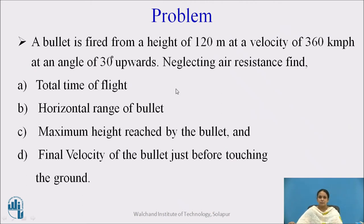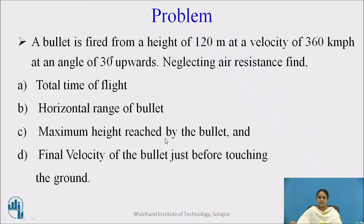Now we will see the problem — how to calculate the time of flight, range, and maximum height. In this problem, a bullet is fired from a height of 120 meters at a velocity of 360 kilometers per hour at an angle of 30 degrees upward, meaning it is an inclined projection thrown upward with an inclination of 30 degrees. Neglecting air resistance, find the total time of flight, horizontal range of the bullet, maximum height reached by the bullet, and the final velocity of the bullet just before touching the ground.